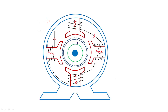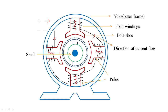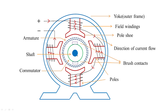Looking at the basic construction details, we have seen the yoke, the field windings placed on the poles, and these poles protecting the field windings with the help of pole shoes. Then the direction of current flowing in the four-pole machine, the shaft which is the center of the entire construction, the armature placed between the poles and the shaft, the commutator and brush contacts where current is collected, and the entire frame kept on a stand.